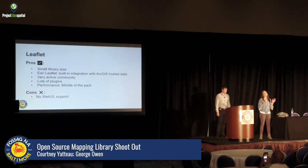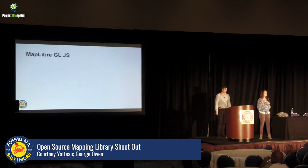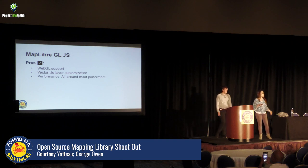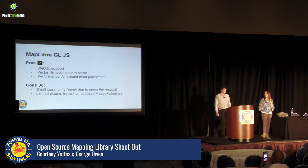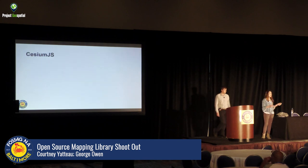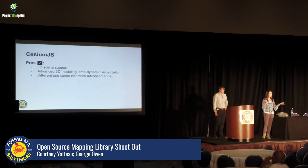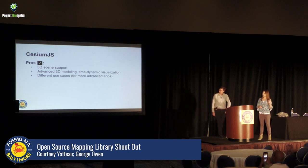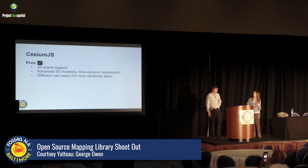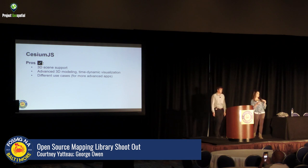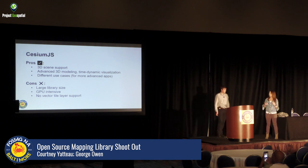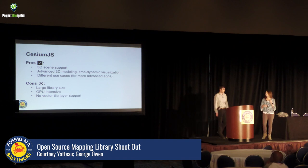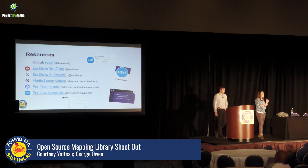For MapLibre GL JS: pros include WebGL support, excellent vector tile layer customization, and strong performance — if we had to pick one all-around winner, this would probably be it. Cons are a smaller community, partly because it's the newest, and limited plugins. For Cesium JS: pros are 3D scene support, advanced 3D modeling, and time-dynamic visualization — it's the library for more advanced and specific use cases. Cons are large library size, GPU intensity, and no vector tile layer support.